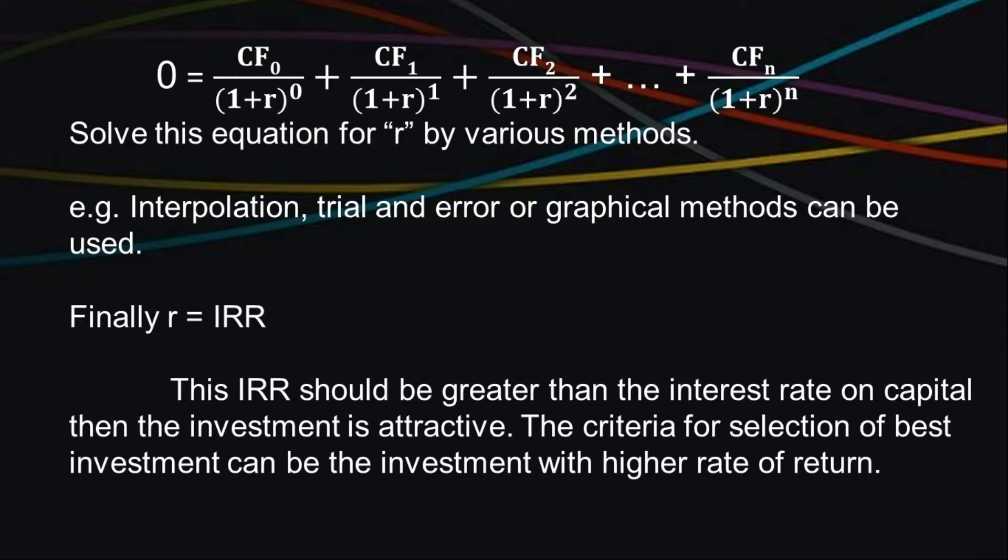Now, the equation becomes 0 is equal to CF0 upon 1 plus r raise to 0 plus CF1 divided by 1 plus r raise to 1 and so on. And this equation can be solved by various numerical methods like interpolation, curve fitting and graphically also.